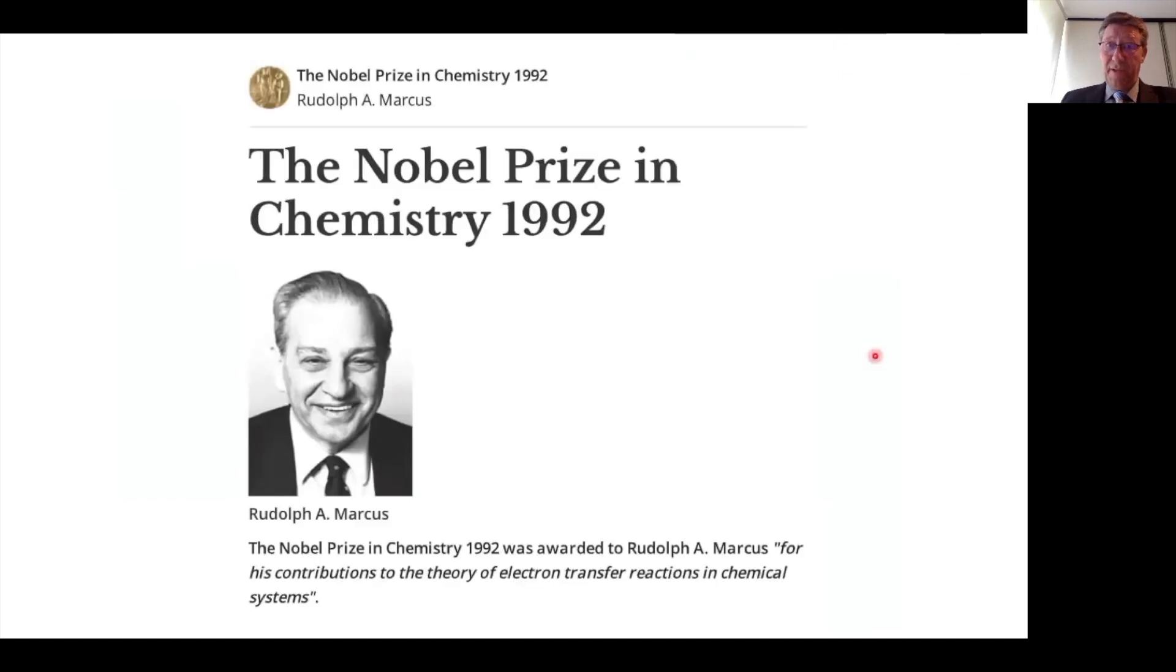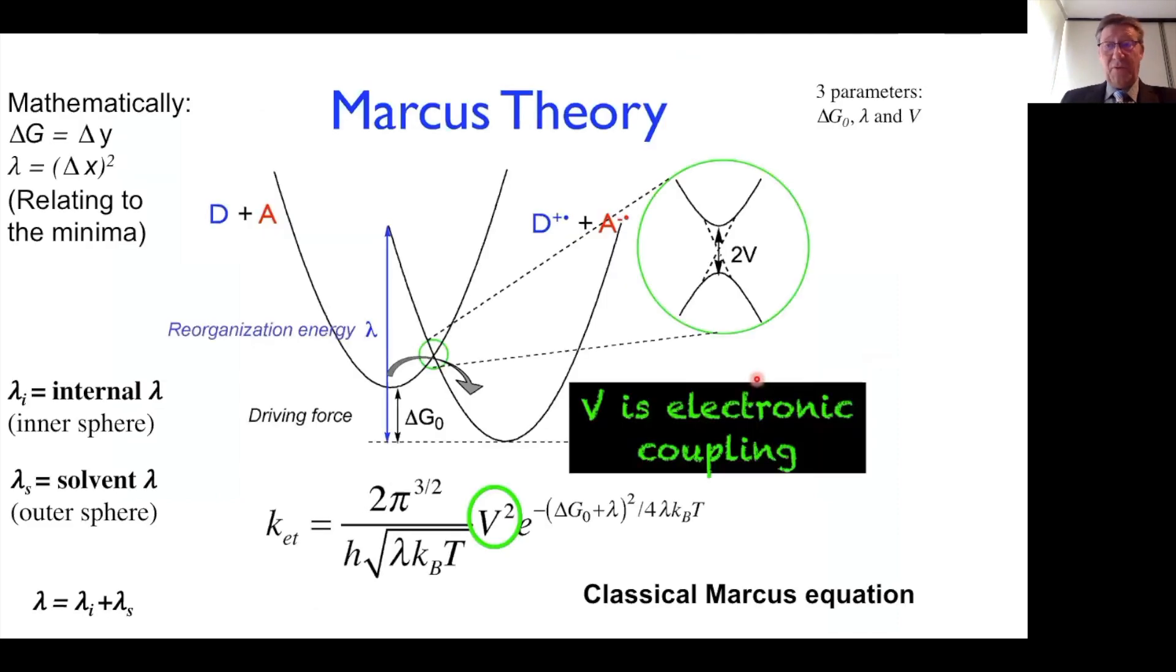This is Rudolf Marcus. He got the Nobel Prize about 90 years later for developing the theory of electron transfer. This represents Marcus theory. Marcus theory is based on two intersecting quadratic functions, and they represent the reactant and the product. The y-axis is energy. The x-axis is nuclear and solvent coordinates, also called the reaction coordinate.